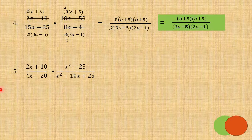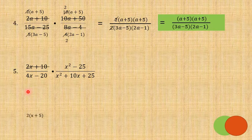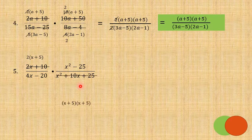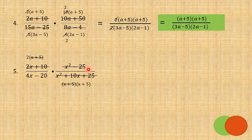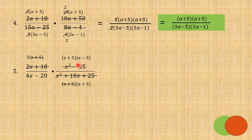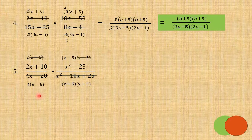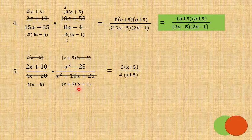Number 5: (2x+10) over (4x-20) times (x²-25) over (x²+10x+25). Factor 2x+10 as 2(x+5) using common monomial. Factor x²+10x+25 as a perfect square trinomial: (x+5)(x+5). Cancel out (x+5). Then for x²-25, using the difference of two squares: (x+5)(x-5). And 4x-20 factors as 4(x-5) using common monomial. Cancel out (x-5). Then multiply the remaining factors.